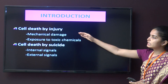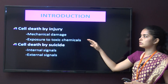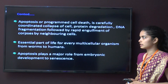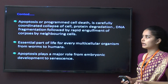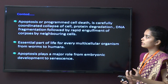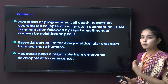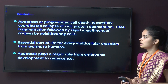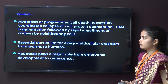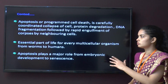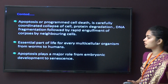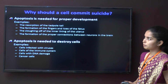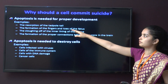Apoptosis: cell death can occur by injury — mechanical damage or exposure to toxic material — or by suicide via internal or external signals. Apoptosis is defined as programmed cell death: a carefully coordinated collapse of the cell involving protein degradation and DNA fragmentation, followed by rapid engulfment of the corpses by neighboring cells. It is an essential part of life for every multicellular organism and plays a major role from embryonic development to senescence (cell aging).